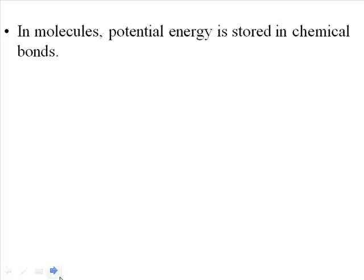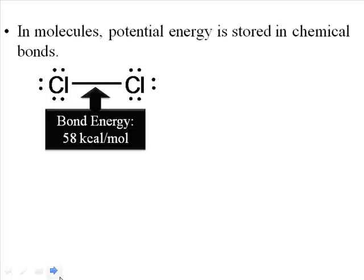Let's look at a really simple example. The single covalent bond that forms between two chlorine atoms is an example of a bond that has energy stored in it. Just by looking at it, I can't tell anything about the amount of energy in it, but if I were to measure it in a laboratory or look this up in the literature, I'd find that there's actually an energy associated with that particular bond. We call this the bond energy.